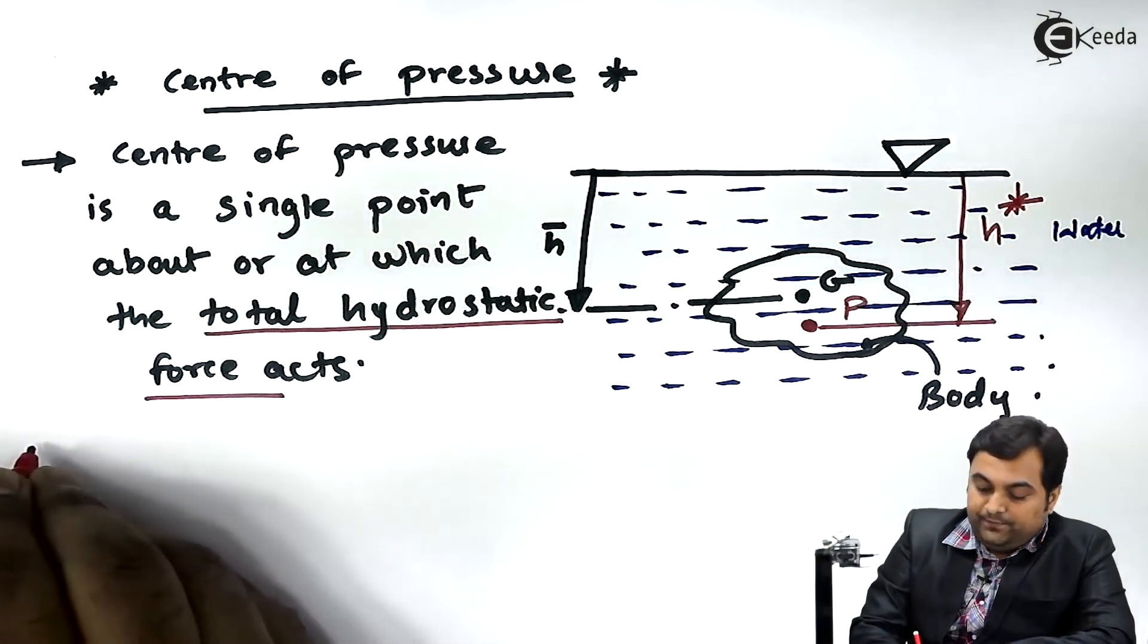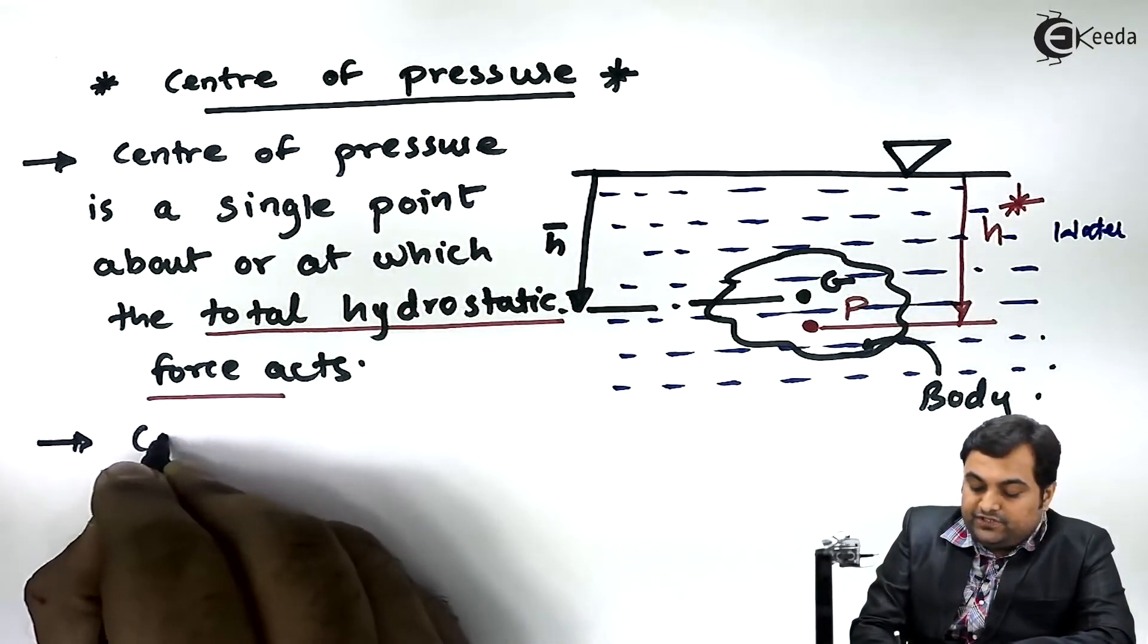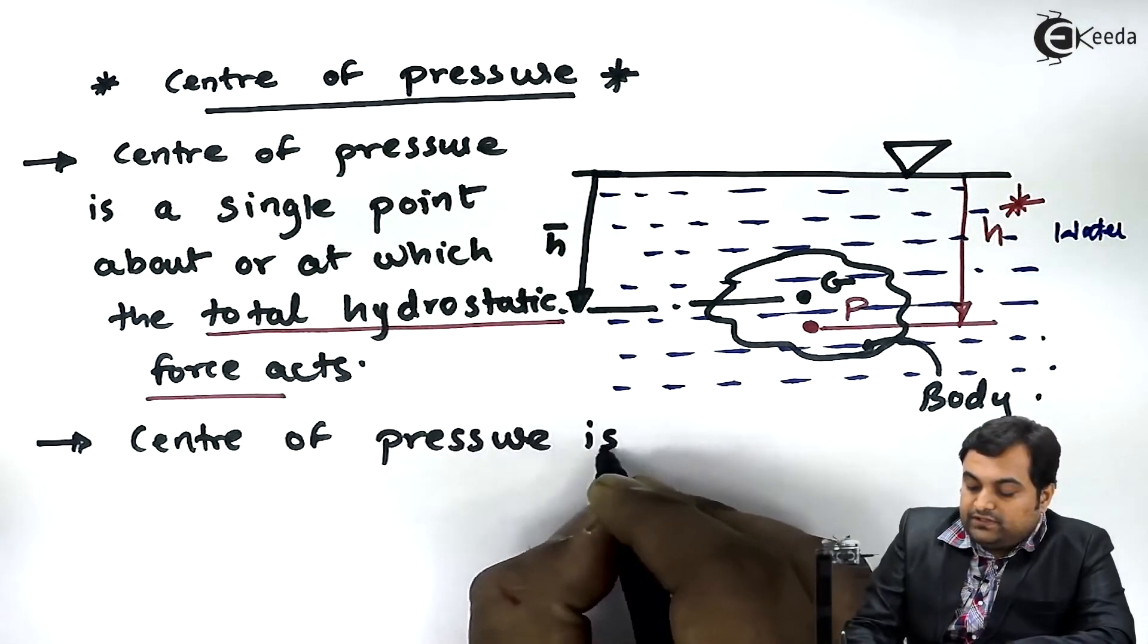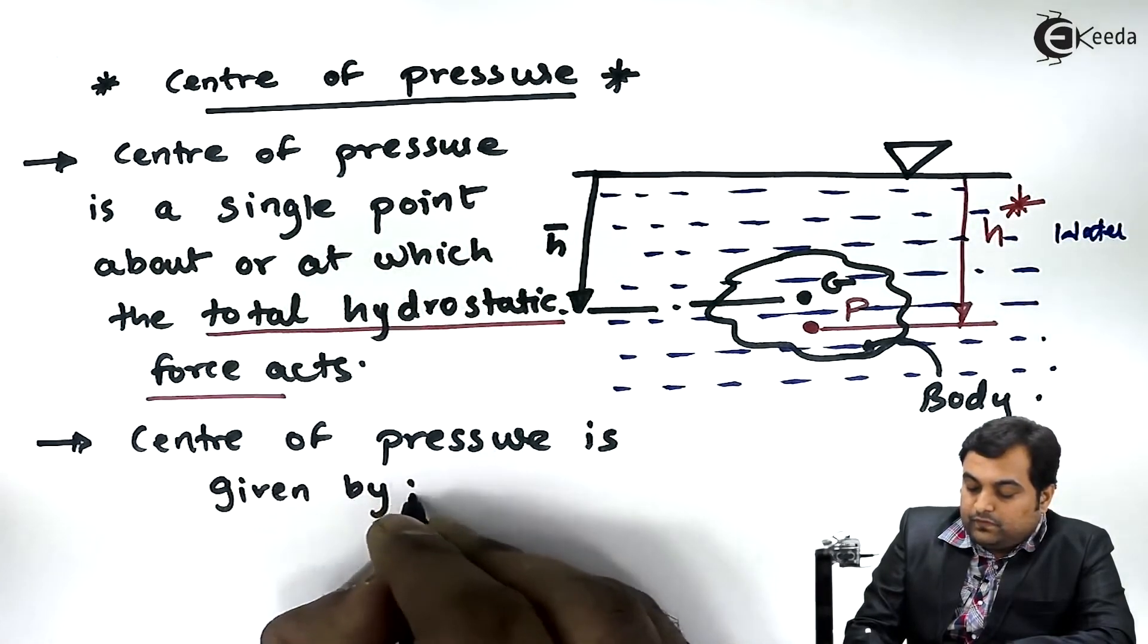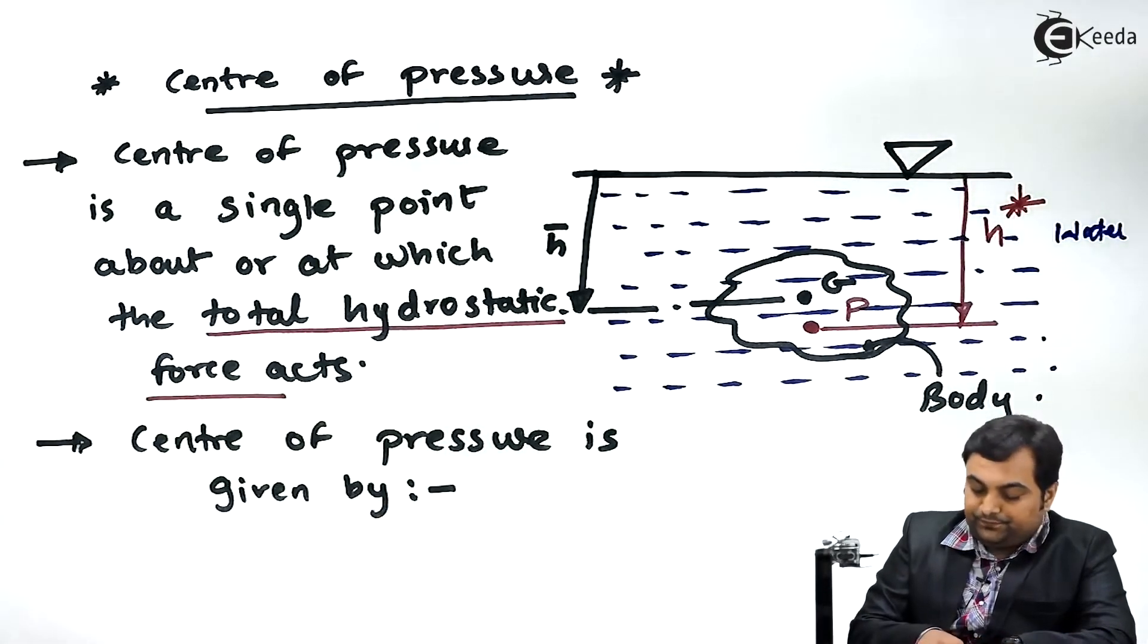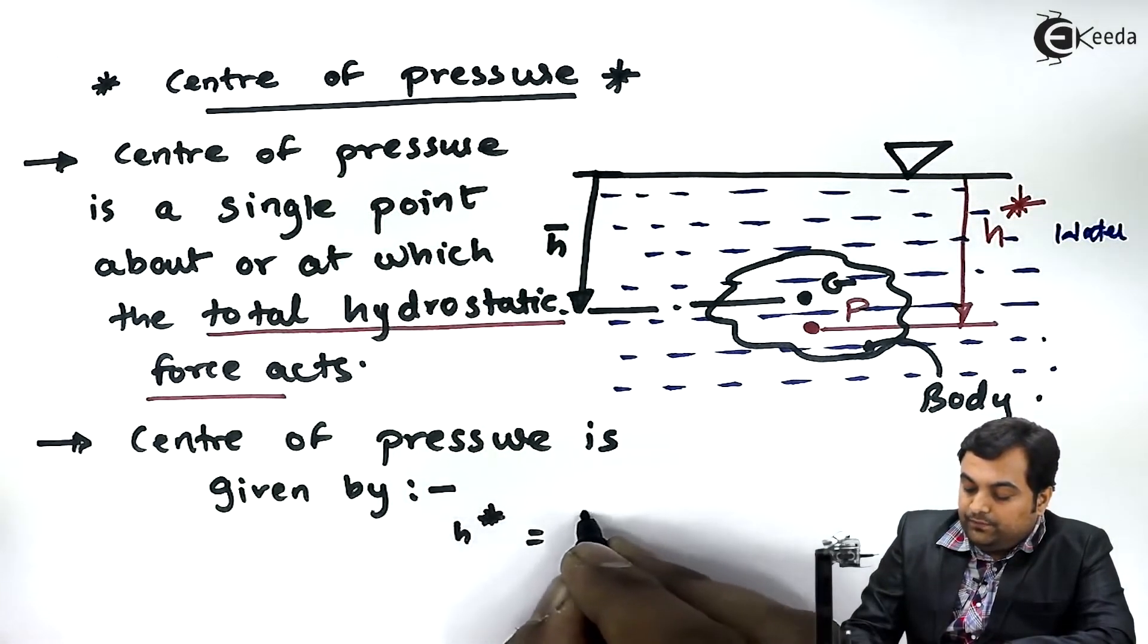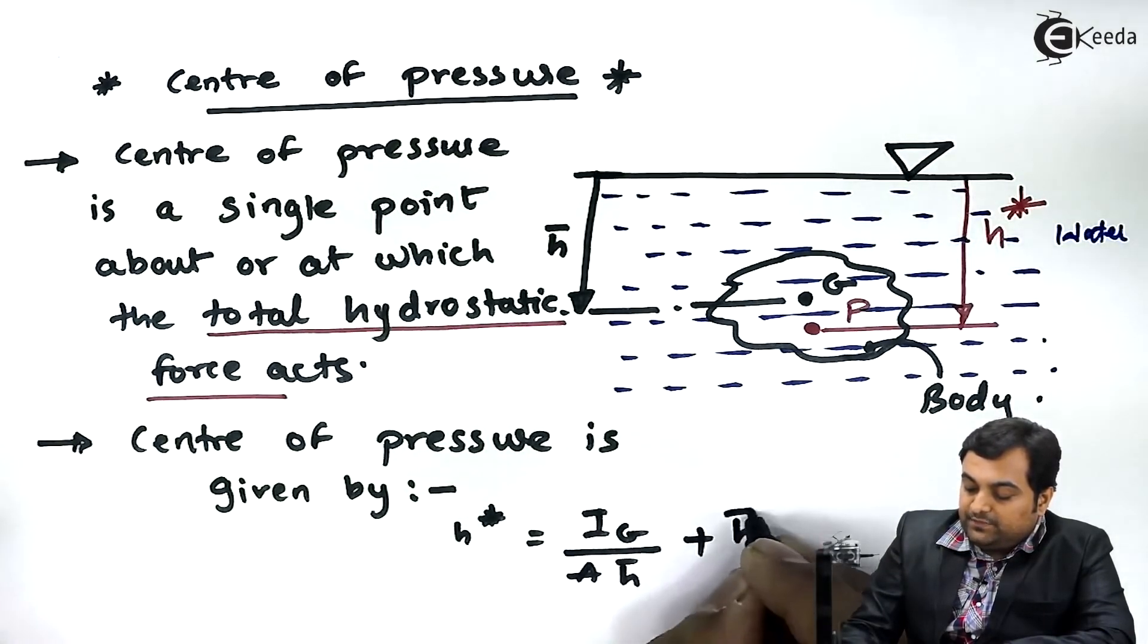I'll write down that center of pressure - the formula is H star is equal to IG upon A H bar plus H bar.